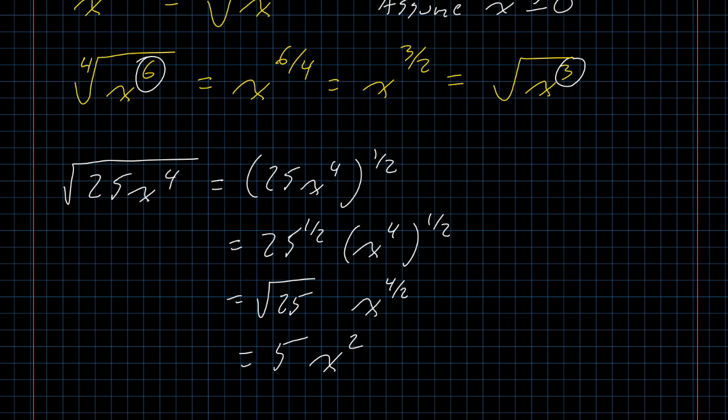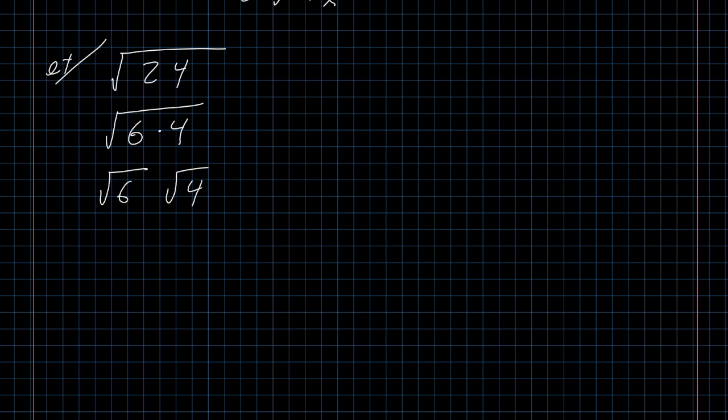Those are the ideas that we're going to be thinking about when we talk about reducing a radical. The examples that you see most often are going to involve just numbers and no variables. This is the sort of thing that I often call an answer only a mathematician could love. If I take the square root of 24, I know that 24 is the same thing as 6 times 4, and I can split that up. Square root of 4 is 2, and it's more commonly written with the whole part in front, 2 square root of 6.